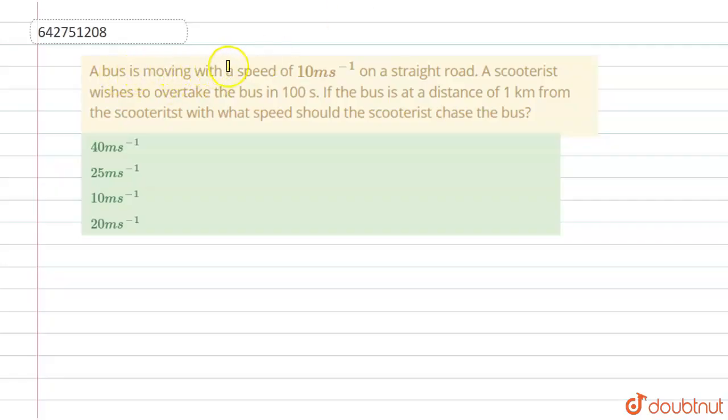A bus is moving with the speed of 10 meter per second on a straight road. A scooterist wishes to overtake the bus in hundred seconds. If the bus is at a distance of one kilometer from the scooterist, with what speed should the scooterist chase the bus? In this question we have to find this speed.